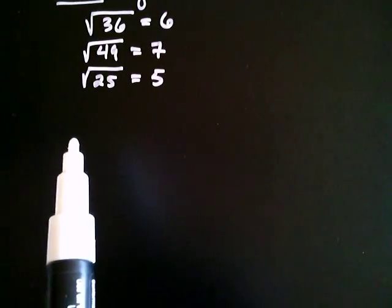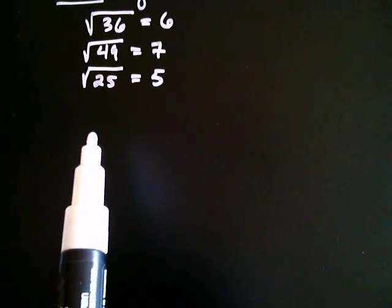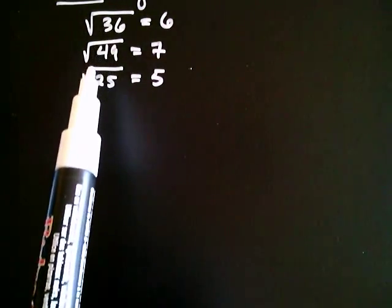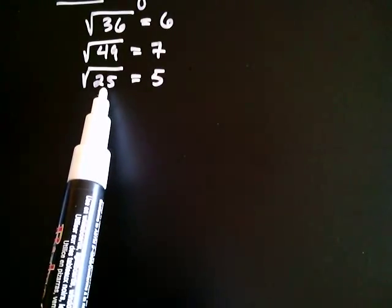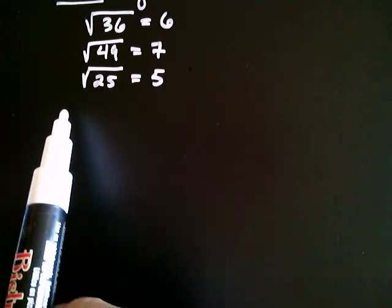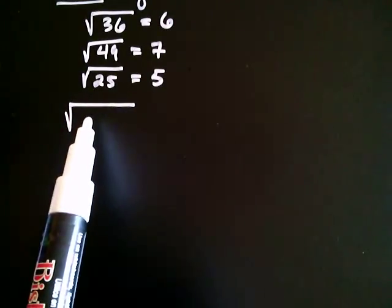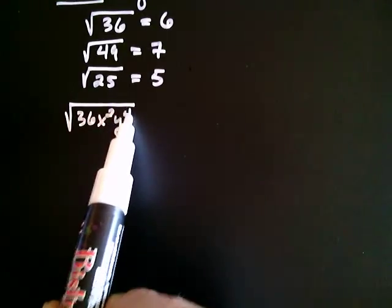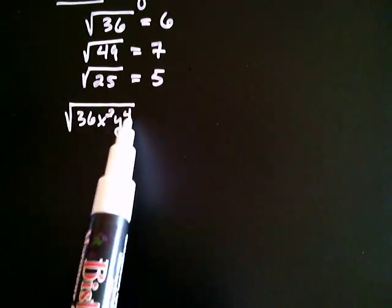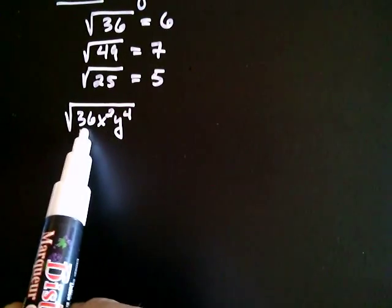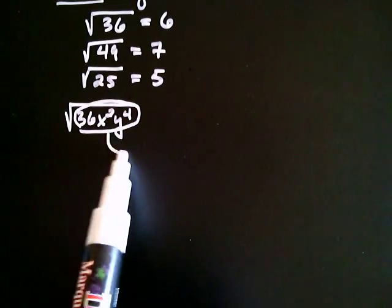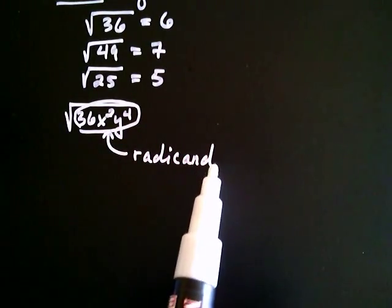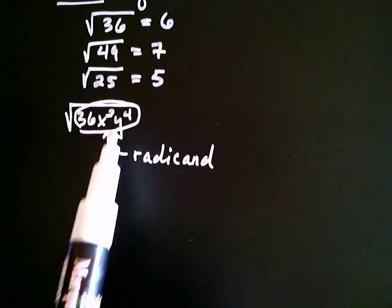There's a little more terminology we want to be comfortable with. Generally speaking, what's under the radical symbol — in this case the 25, or the 49, or the 36 — is whatever you're taking, and often it's going to be more complicated. Later on we'll have expressions like the positive square root of 36 x squared y to the fourth. That whole expression inside has a special name: it's called the radicand. Whatever's under this symbol is called the radicand.